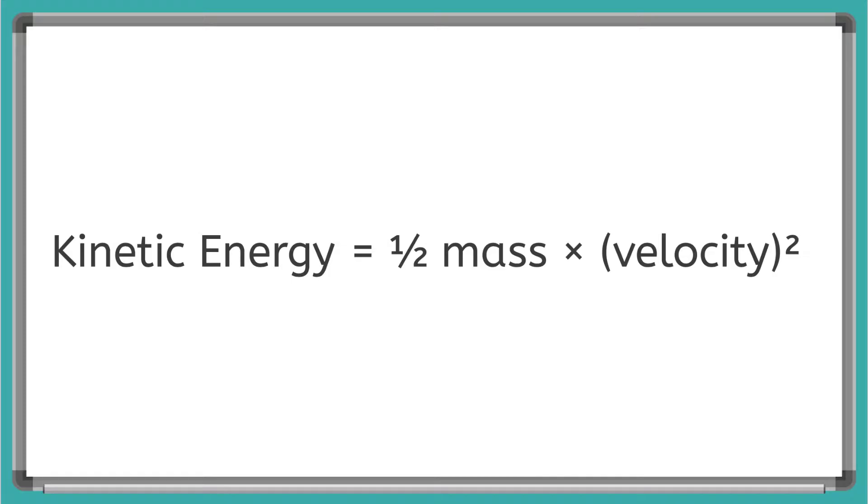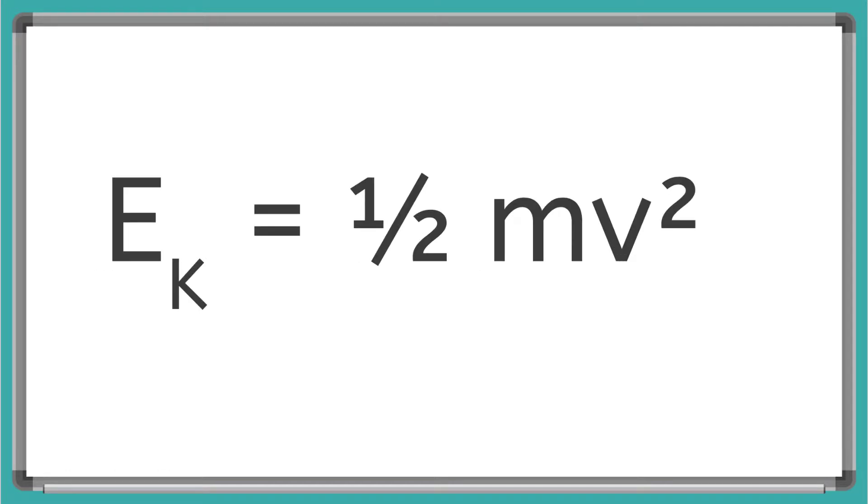Remember from algebra, we can use variables to represent certain numbers or quantities. So we can also write this equation Ek equals one-half mv squared. And this may look a little bit scary, but let's break it down. We use the variable E to represent energy, and we put the little k down below so we can remind ourselves that what we are calculating is the kinetic energy.